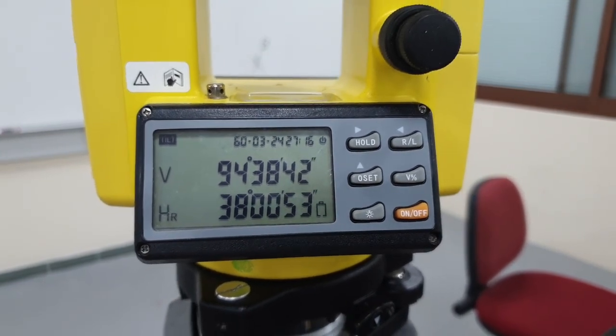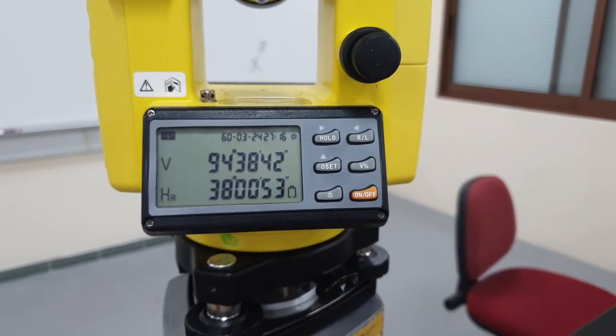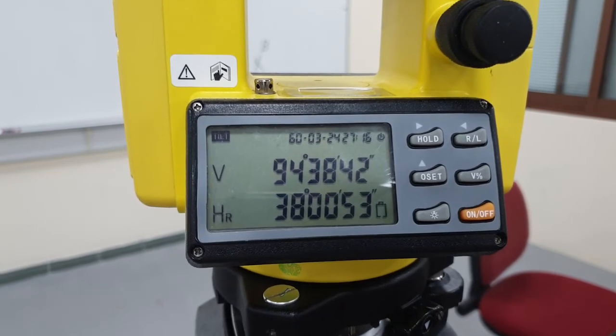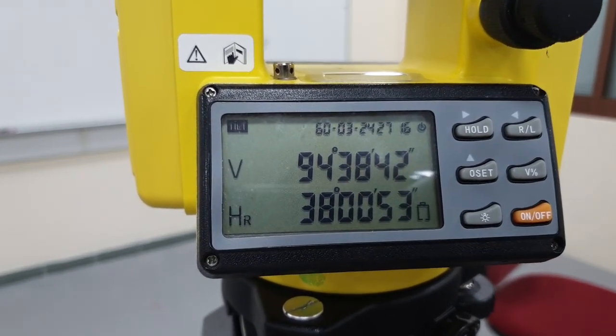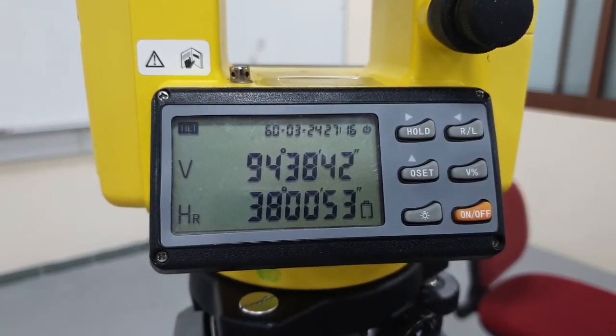Now this is the simple measurement of the angle. To calculate the vertical angle, you need to subtract the first vertical angle from the second vertical angle, and you can see the angle between the two points.